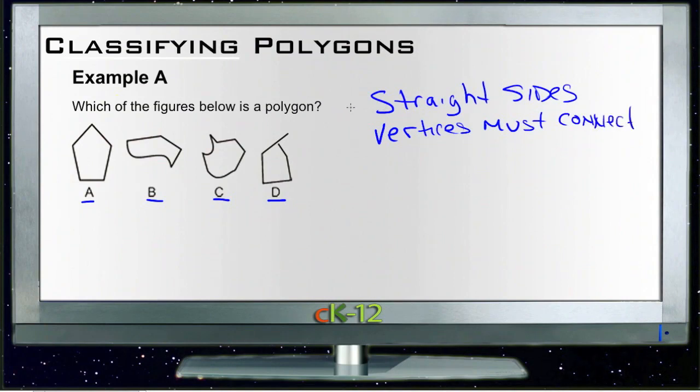Okay, so first of all, if we go with just the first rule, straight sides, that nixes B and C. And if we go with the second rule, vertices must connect, that nixes D, which tells us that the only one that actually is a polygon is A.